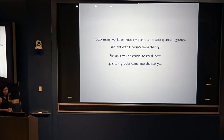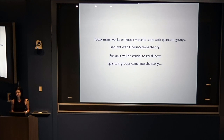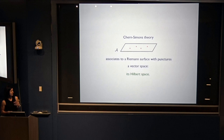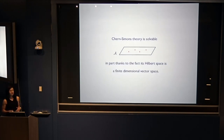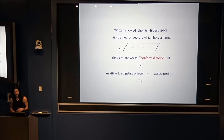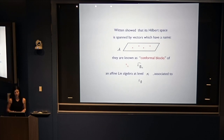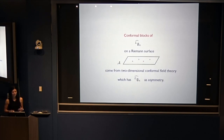Chern-Simons link invariants are known as quantum group invariants. Their reformulation in terms of quantum groups was given by Reshetikhin-Turaev in 1989, a year after Witten's work. This quantum group symmetry isn't manifest classically as a symmetry of the action — rather, it's a quantum symmetry of Chern-Simons theory. Chern-Simons theory associates to a Riemann surface with punctures a vector space, its Hilbert space. The punctures are positions of heavy charged particles colored by representations of the Lie algebra. The Hilbert space turns out to be finite dimensional — it is spanned by conformal blocks of the affine Lie algebra associated to G at level K.